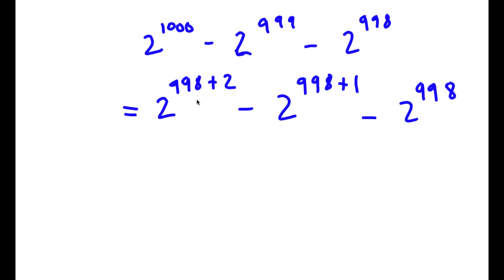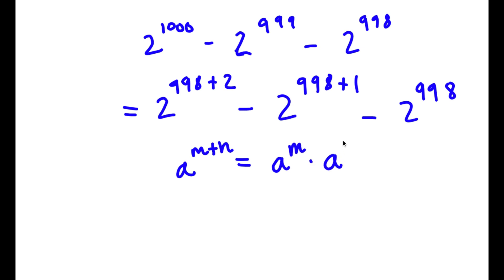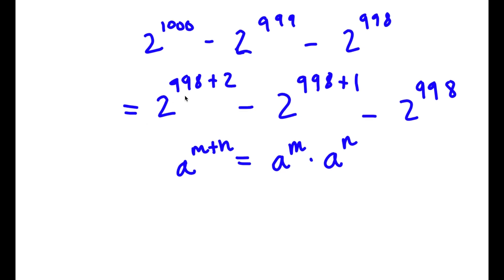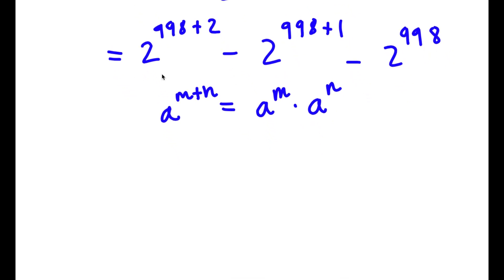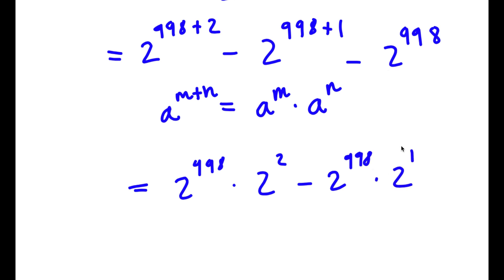So now I have 2 to the power of 998 plus 2, minus 2 to the power of 998 plus 1, minus 2 to the power of 998. All my exponents have 998 in them. Using the rule that a to the power of m plus n equals a to the power of m times a to the power of n, I can rewrite 2 to the power of 998 plus 2 as 2 to the power of 998 times 2 to the power of 2, and similarly 2 to the power of 998 plus 1 as 2 to the power of 998 times 2 to the power of 1.